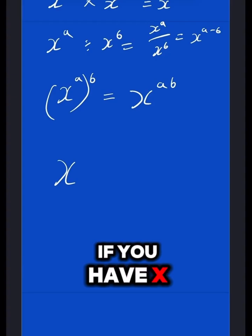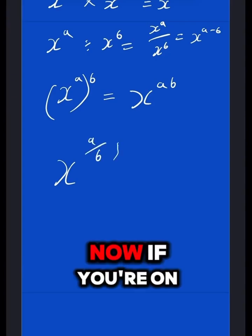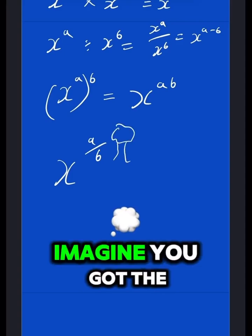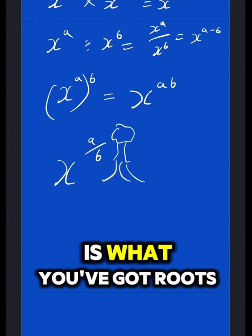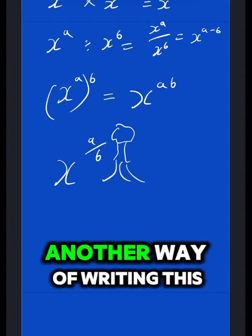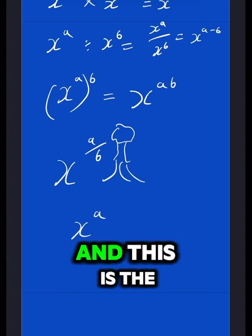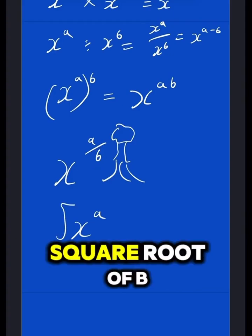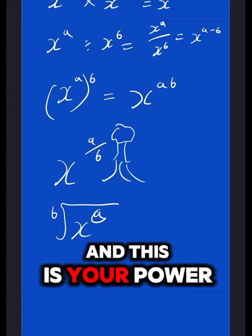Now, another one is, if you have x to the power of a over b, view this as a tree. Now, if you're on top of the tree, imagine you've got the high ground, you've got the power, so this is the power, and underneath the tree is what? You've got roots. So, another way of writing this, it would be x to the power of a, and this is the root of the tree, so it would be the square root of b. This is your root, and this is your power.